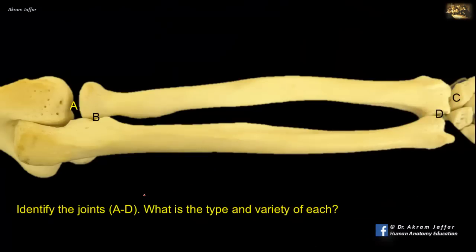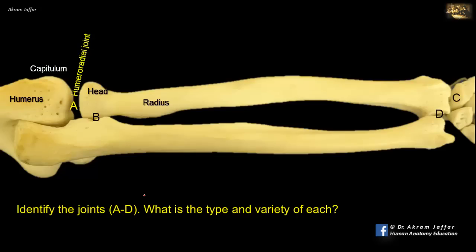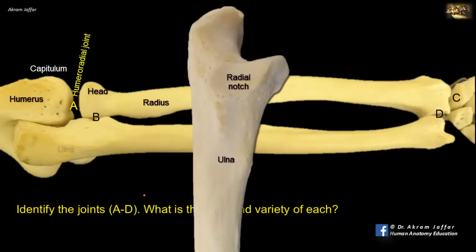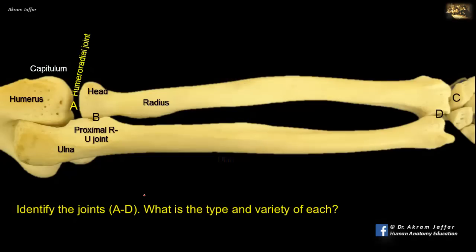Identify the joints A to D. What is the type and variety of each? All are synovial joints. A is the joint between the head of the radius and the capitulum of the humerus. It is the humeroradial joint, part of the elbow joint, which is a hinge type of synovial joint. B is the joint between the circumference of the head of the radius and the radial notch of the ulna. It is the proximal radio-ulnar joint, a pivot type of synovial joint, allowing rotation together with the distal radio-ulnar joint, D.